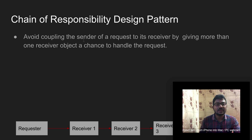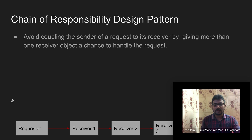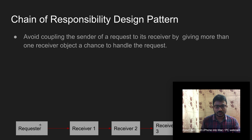The main motto behind the chain of responsibility design pattern is to avoid coupling the sender of a request to its receiver by giving more than one receiver object a chance to handle the request. If we assume this is a client and these are some servers, instead of assigning jobs to a particular server, the request should be handled by any server at runtime.